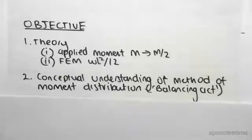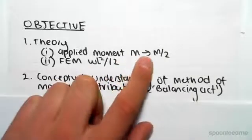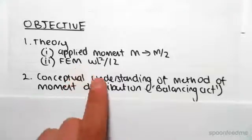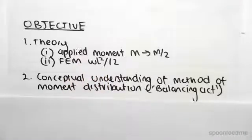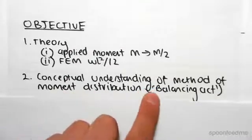Hey guys, the objective of this video is to discuss two theoretical concepts, which is the applied moment at one end being M resulting in M/2 on the other end. We're then going to look at the fixed end moments of a beam, which will be wL²/12. We're then going to do an example to give a conceptual understanding of the method of moment distribution, which I like to call a balancing act.